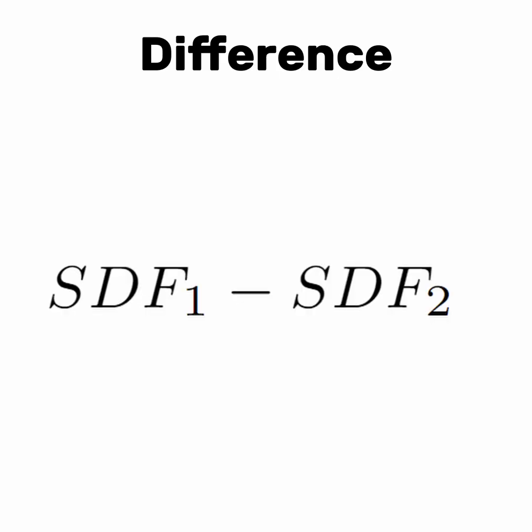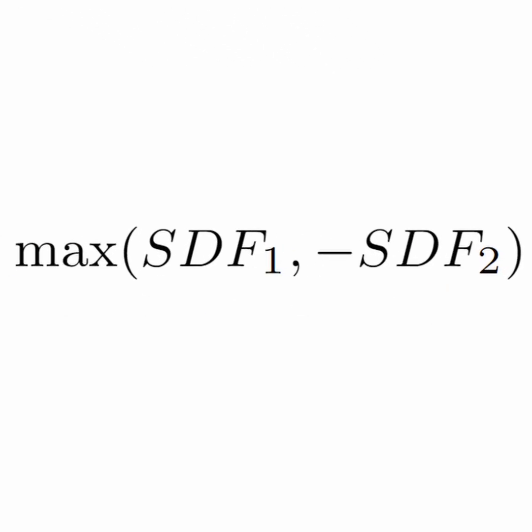All you have to do is again, take the maximum, but flip one of the SDFs. Now these operations, the intersection and the difference don't guarantee that you get a globally valid SDF, but visually it will work for pretty much all our purposes.